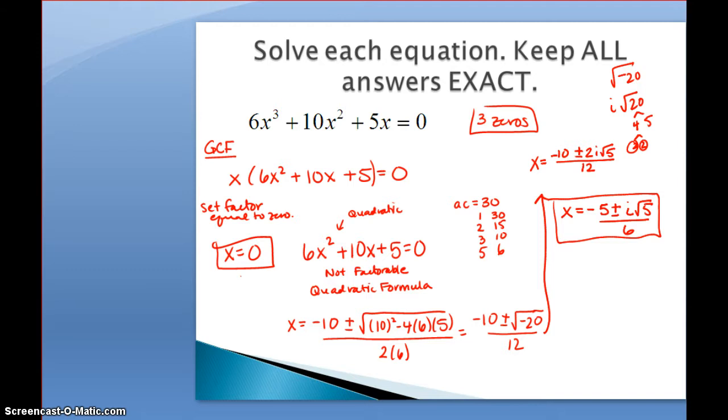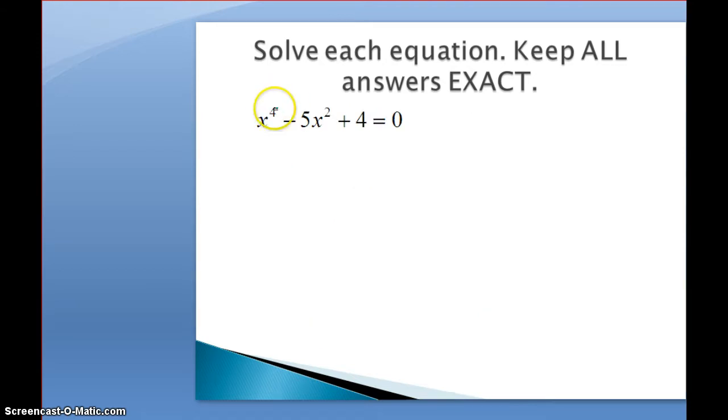We're going to move on to another problem. This problem is quartic, so we know that there should be four zeros. So we look and we notice there is no GCF. There are sort of two options if there's no GCF. One is to try to factor, and we talked about this, that you can factor quartics the same way that you factor quadratics. So no GCF, but we could try to factor.